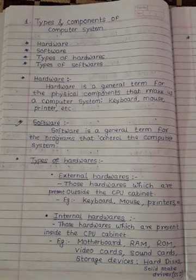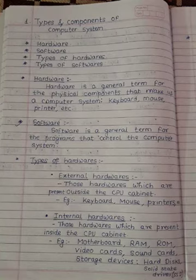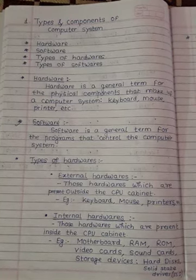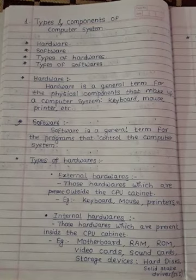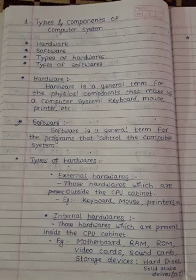The examples of internal hardware are motherboard, RAM, ROM, video cards, sound cards, and storage devices — that is hard disk and solid state drives. We will see these examples in detail. The first example is the motherboard. The motherboard is a printed circuit found in all computers.